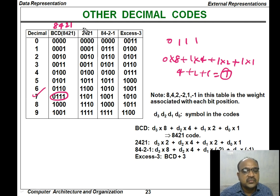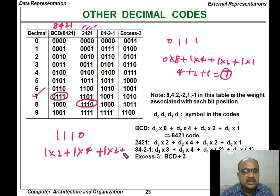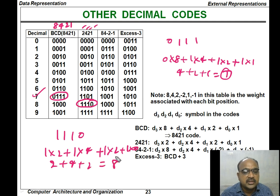Similarly, you can define the 2421 code. Here the weights will be 2, 4, 2, 1. For example, if you consider the number 1110, the value will be 1 into 2 plus 1 into 4 plus 1 into 2 plus 0 into 1, that is 2 plus 4 plus 2, which equals 8 — the equivalent decimal number.